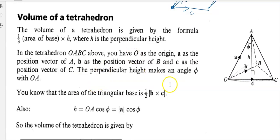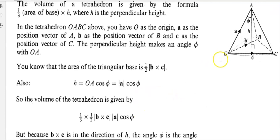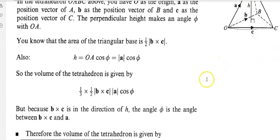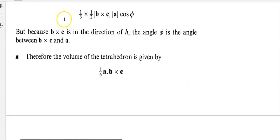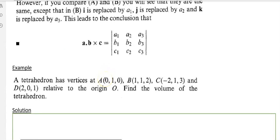For the volume of a tetrahedron: a tetrahedron is a four-sided pyramid with a triangular base and three sides going up to an apex. Using the pyramid formula — one third times base area times perpendicular height — combined with the triangle area formula, gives one third times one half times |A · (B × C)|, i.e., one sixth of the triple scalar product. That's where the formula comes from.